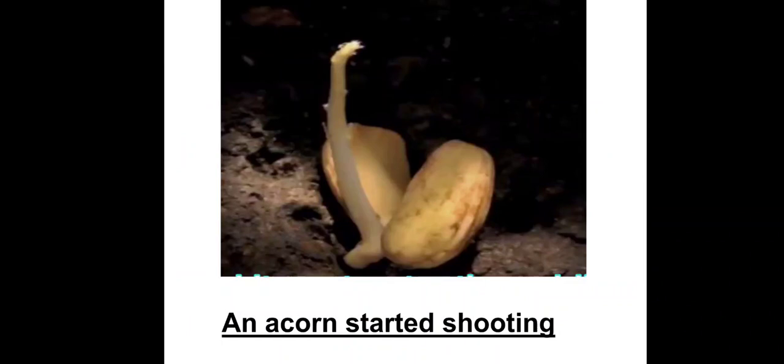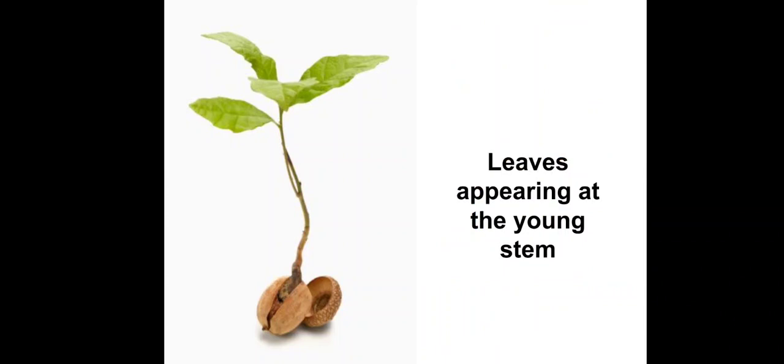Then let us read the next two sentences. Day by day and year by year, little by little, the leaves appear. Now that the roots and shoot have come out from the seed, it is time for the leaves to appear at the young branch just like this. As it is going to become an oak tree, it has to have lot of leaves, just like a banyan tree. So it's going to take years for the tiny sapling to grow those many leaves. It will not happen overnight. So slowly but steadily, the leaves will come out one by one and help the sapling turn into a huge tree.